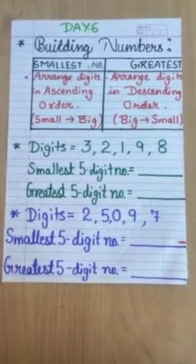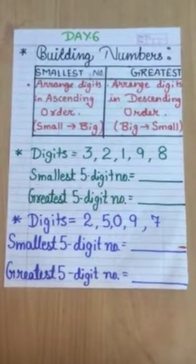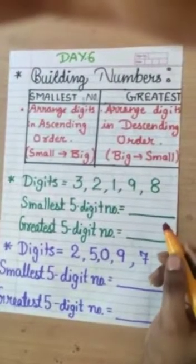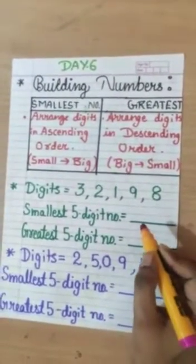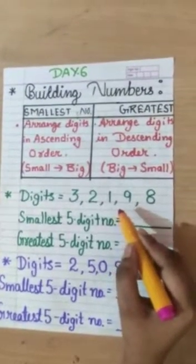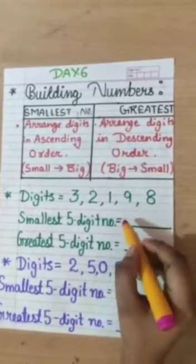Can you help me out? Yes, why not? After converting it in ascending order, what will be the digit coming at the first? 3, 2, 1, 9, 8. I am finding 1 is the smallest.